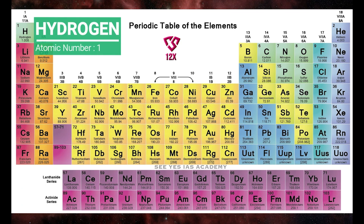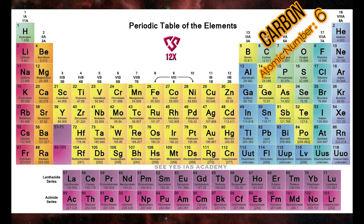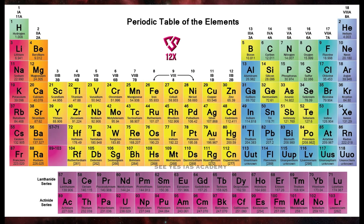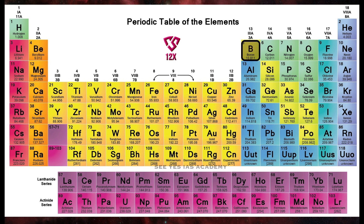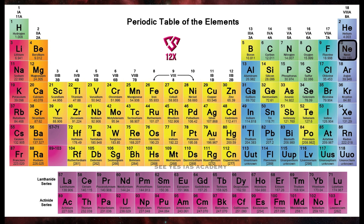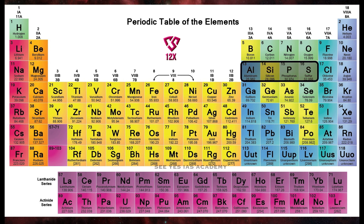Elements listed: hydrogen (atomic number 1), helium, lithium, beryllium, boron, carbon (6), nitrogen (7), oxygen (8), fluorine (9), neon (10), sodium (11), magnesium (12), aluminum (13), silicon (14), phosphorus (15), sulfur (atomic number 16).